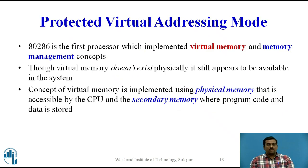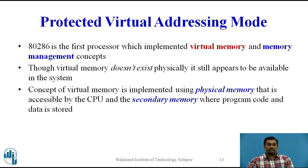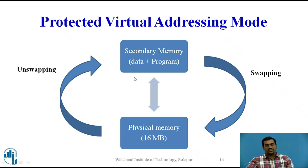The 80286 is the first processor to implement virtual memory and memory management concepts. Though virtual memory doesn't exist physically, it still appears to be available in the system. The concept of virtual memory is implemented using physical memory accessible by the CPU and secondary memory where program code and data is stored. The complete program to be executed is stored in secondary memory such as a hard disk, and this program is divided into segments each of size less than 16 megabytes.